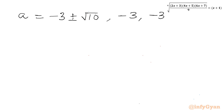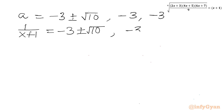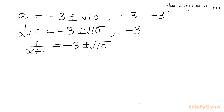Since a = 1/(x+1), we back-substitute. For a = −3 ± √10, we have 1/(x+1) = −3 ± √10, so x+1 = 1/(−3 ± √10). Rationalizing by multiplying numerator and denominator by (−3 ∓ √10), the denominator becomes (−3)² − (√10)² = 9 − 10 = −1.